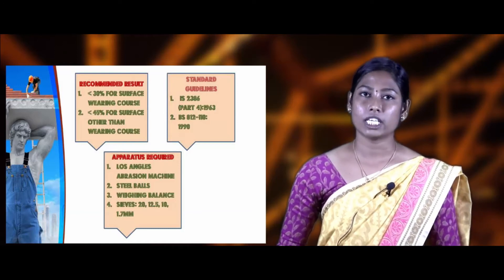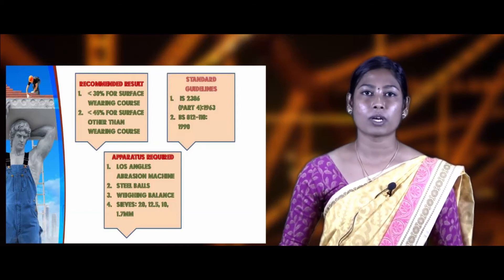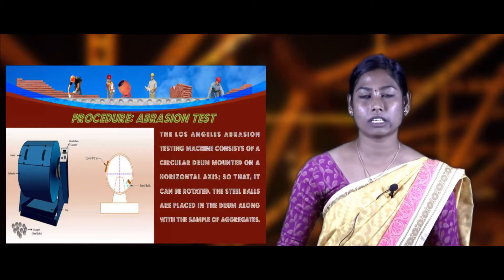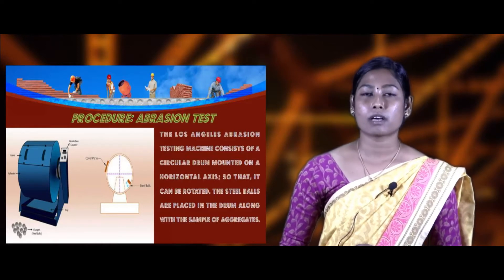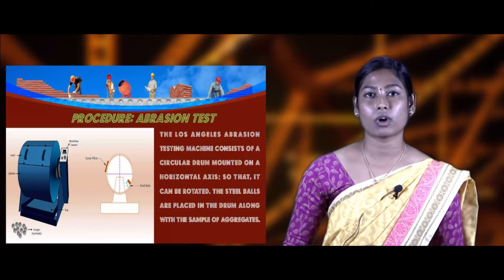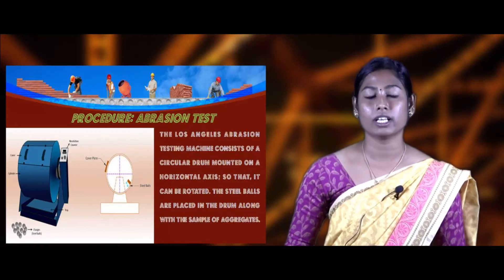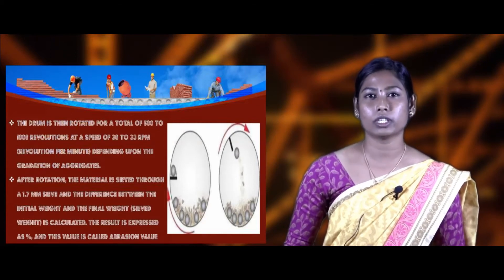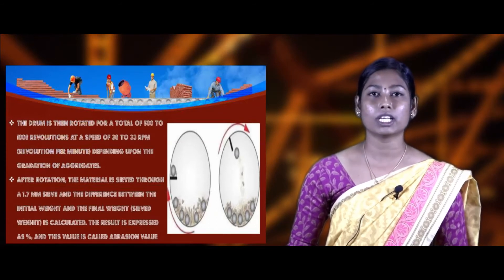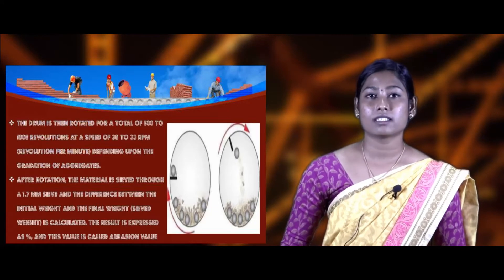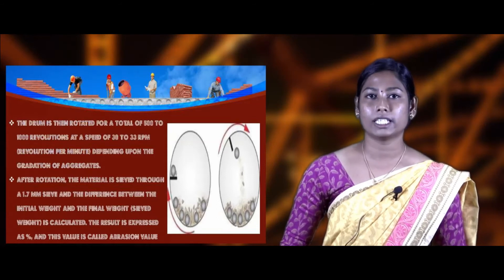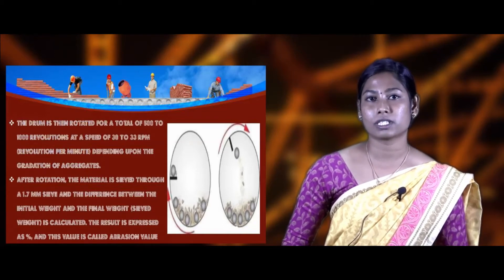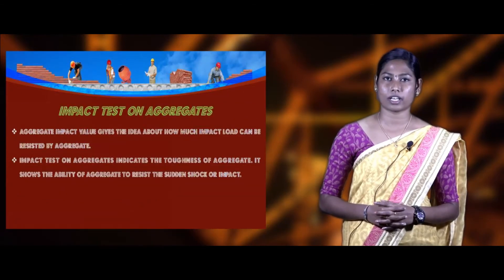Apparatus used for abrasion testing: Los Angeles abrasion machine, 11 steel bars, weighing balance, and sieves of sizes 20 mm, 12.5 mm, 10 mm, and 1.7 mm. Procedure: the Los Angeles abrasion testing machine consists of a cylindrical drum mounted on a horizontal axis that can be rotated. Take a sample of aggregates passing through 12.5 mm and retained on 10 mm, weighed as W1. Place the aggregates into the drum with steel poles and rotate at 500 to 10,000 revolutions at a speed of 30 to 33 rpm depending on gradation. After rotation, remove aggregates, sieve through 1.7 mm sieve, and weigh as W2. The difference between W1 and W2 expressed as a percentage is the abrasion value.